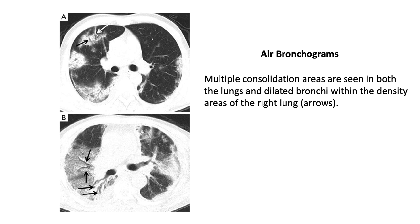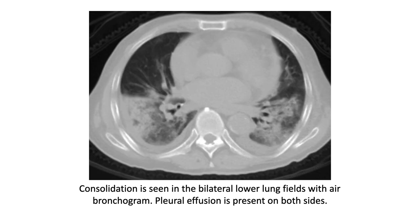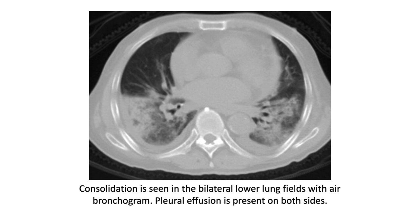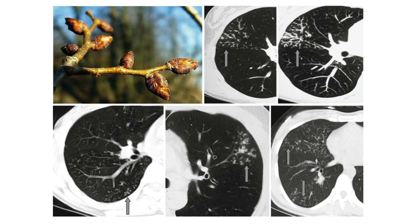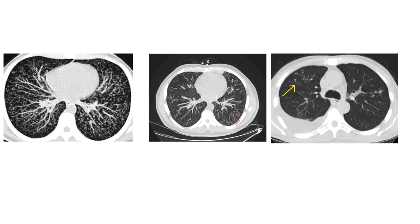Consolidation is a dense opacification with air bronchogram — multiple consolidation areas in both lungs with dilated bronchi within the consolidation are seen. There is also bilateral consolidation with a very thin rim of parapneumonic effusion. Coming to tree-in-bud appearance — CT shows it very clearly. The first image is clearly typical of tree-in-bud appearance, though the middle and right images are more subtle.